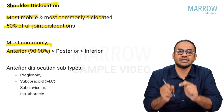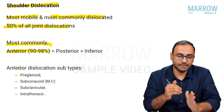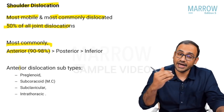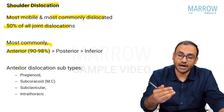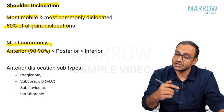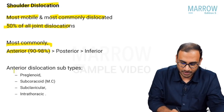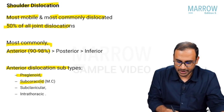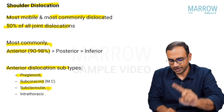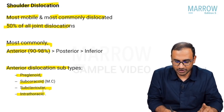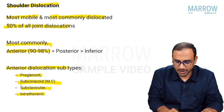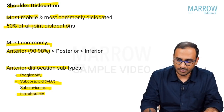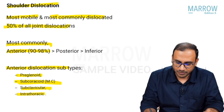Anterior dislocation is subclassified depending on where the head ends up after the dislocation. The four types are subglenoid, subcoracoid, subclavicular, and intrathoracic. The most common is subcoracoid.